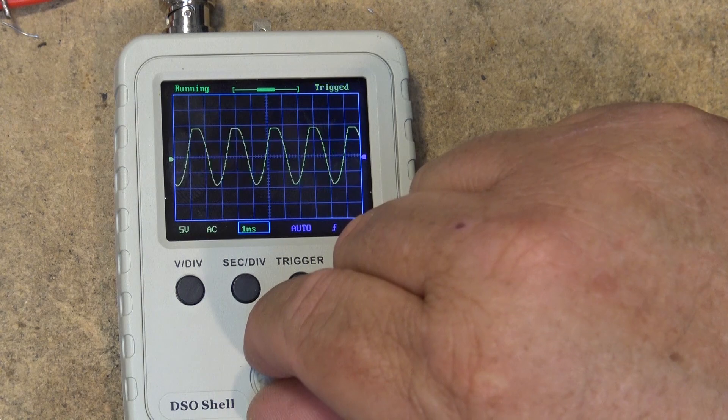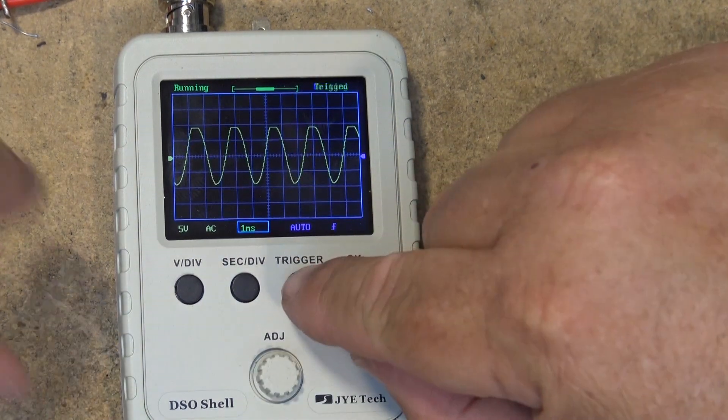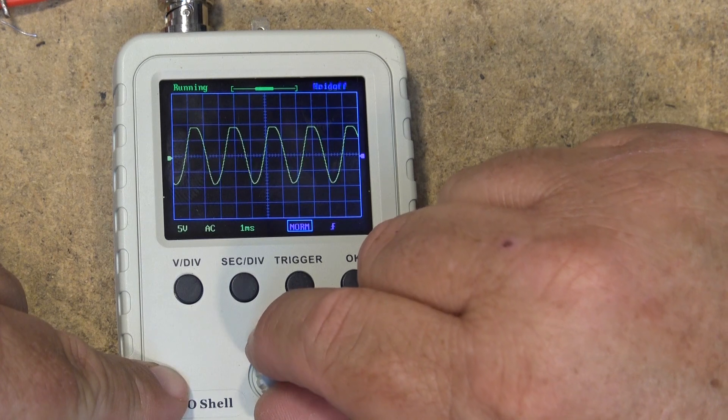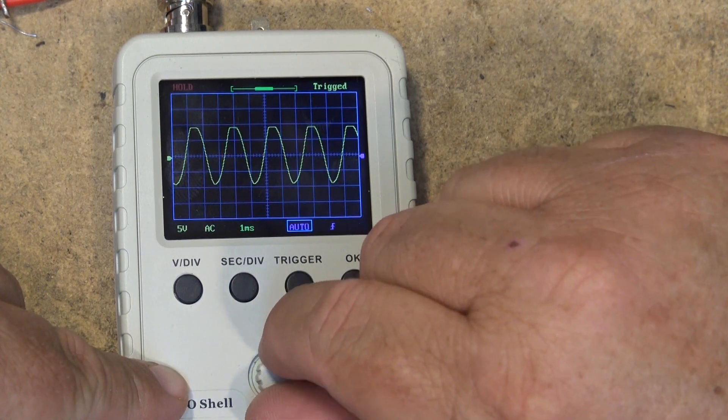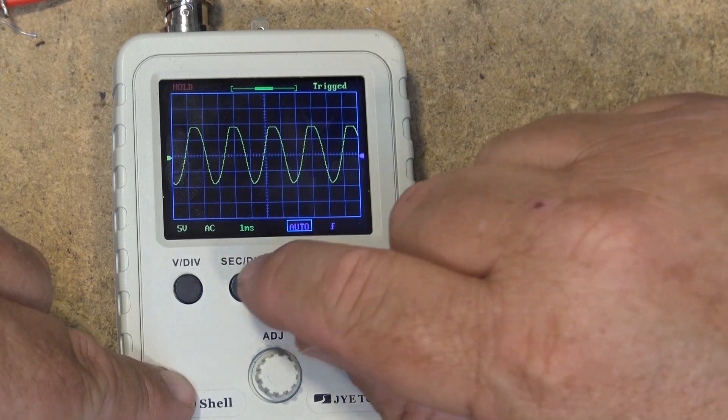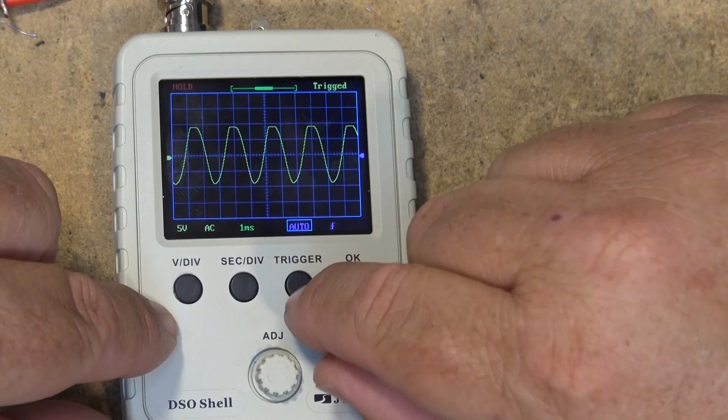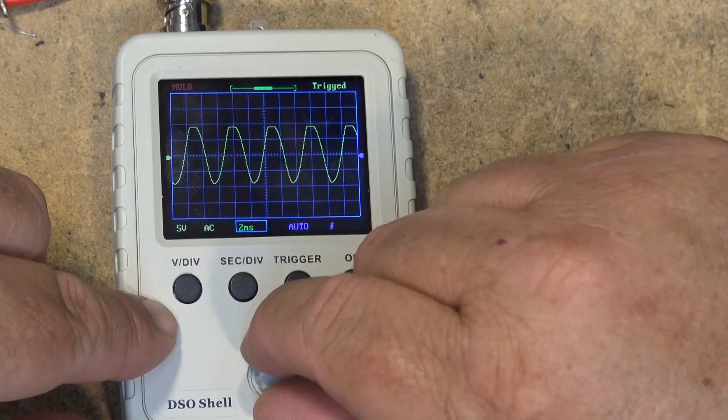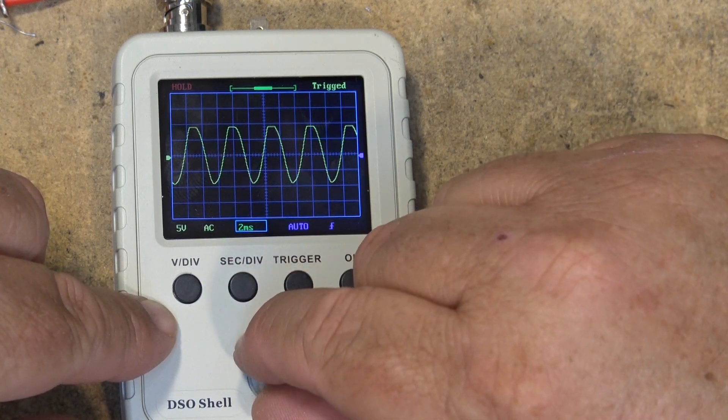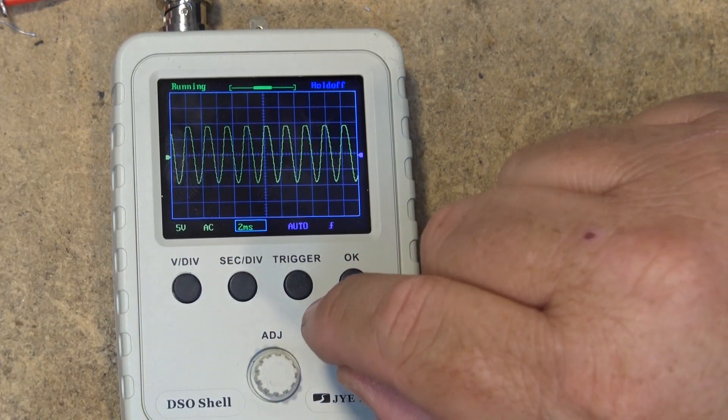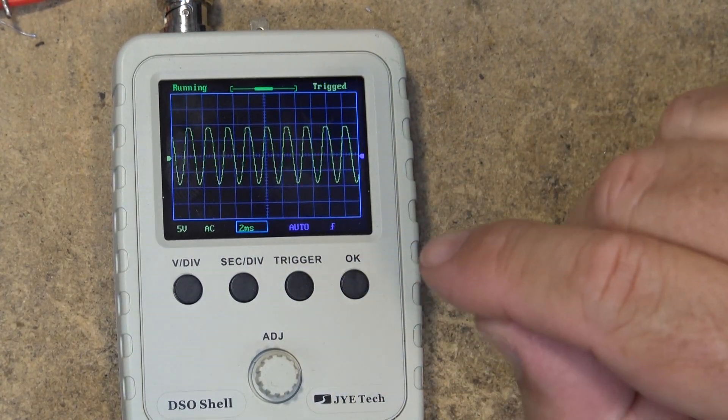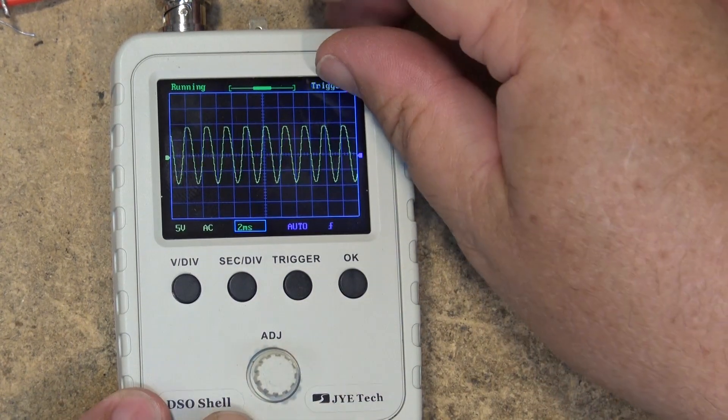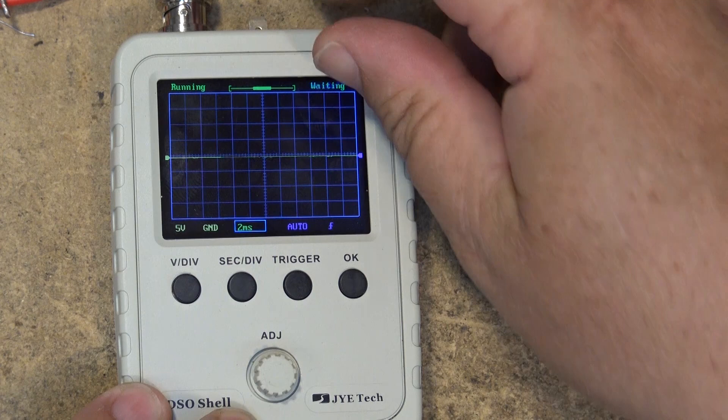For trigger I can set it to auto, normal, or single. I'm in hold mode now. To adjust my vertical position, if I set my input to ground and press and hold the V division button for three seconds, this will center the display.